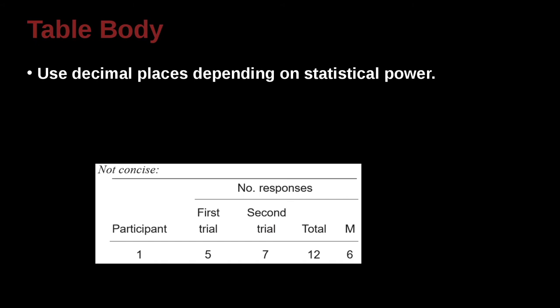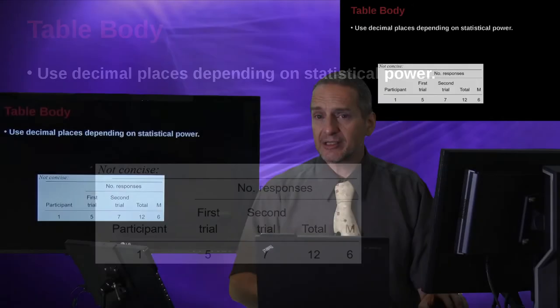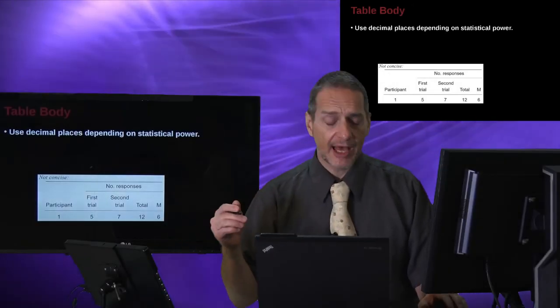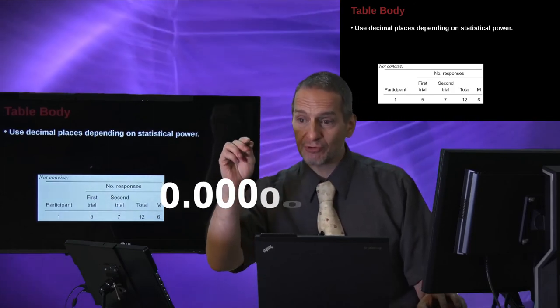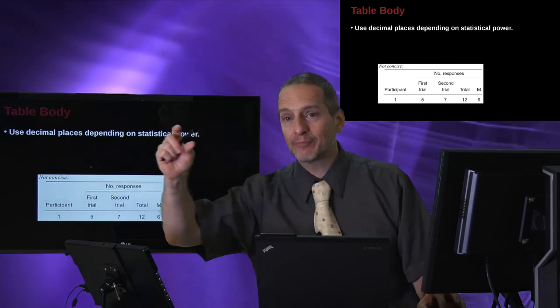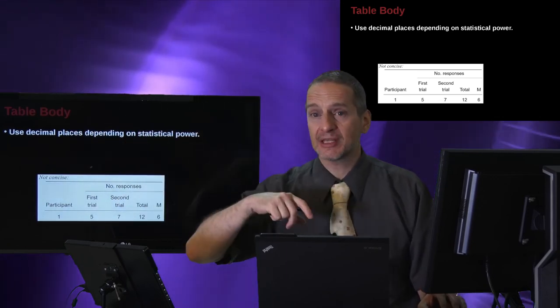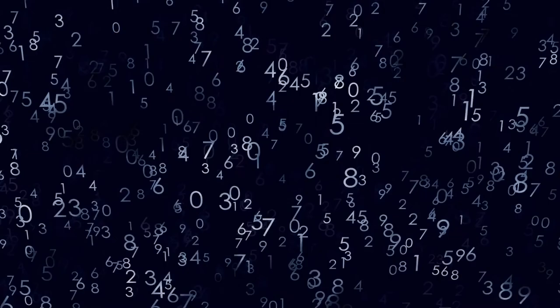So what about the table body? Inside the table body, you can use decimal places depending on the statistical power. So this is something people often forget, and that is how many decimal points should I have? So if I have a number, for example, that's 0.00000001. How many decimal points do I use there? And the answer is quite simple. It depends on your statistical power.